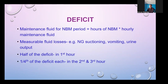For deficit maintenance during the NBM (nil by mouth) period, multiply the hours of NBM by the hourly maintenance fluid rate. Include measurable fluid losses such as NG suctioning, vomiting, and urine output. Half of the deficit should be administered in the first hour, and one-quarter each in the second and third hours.